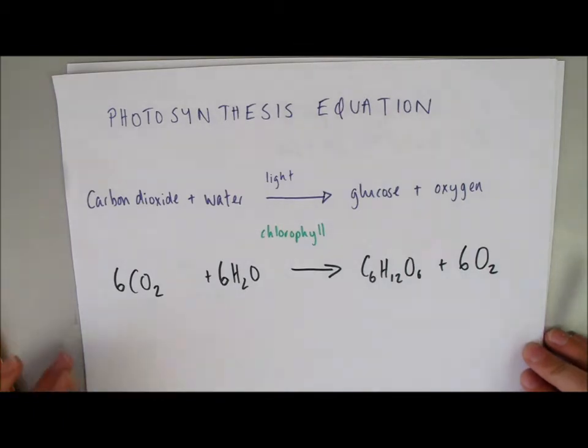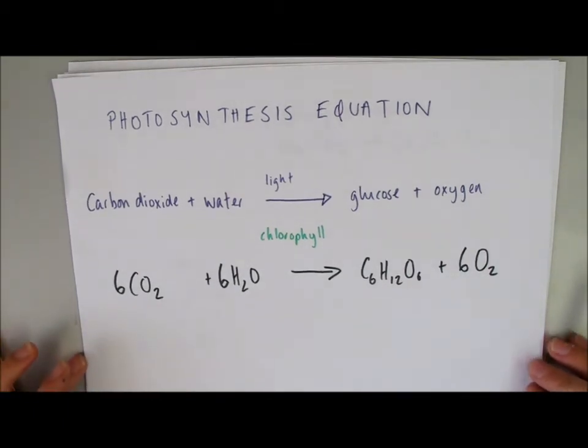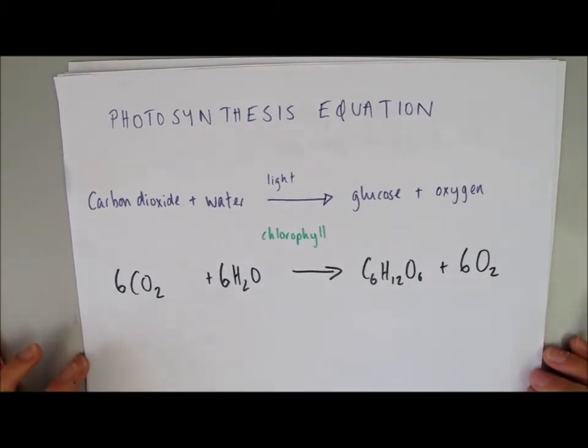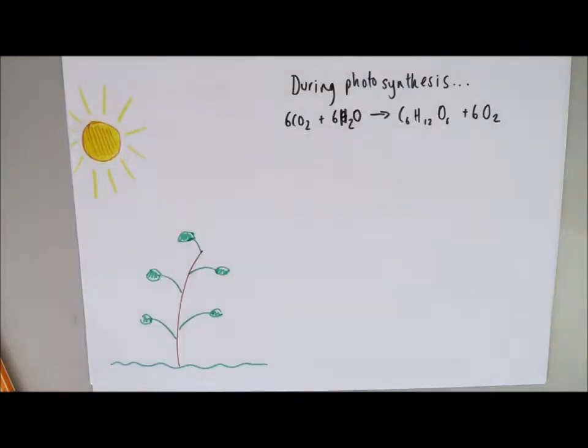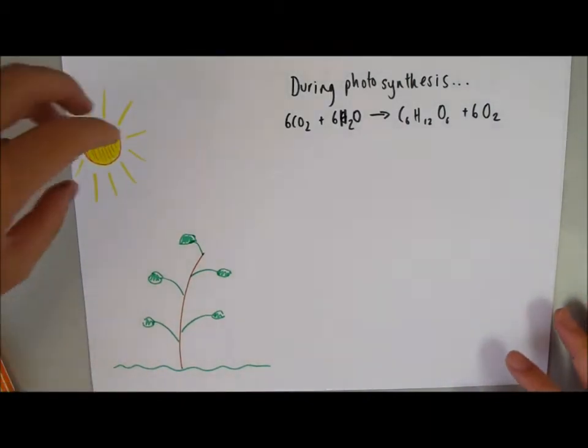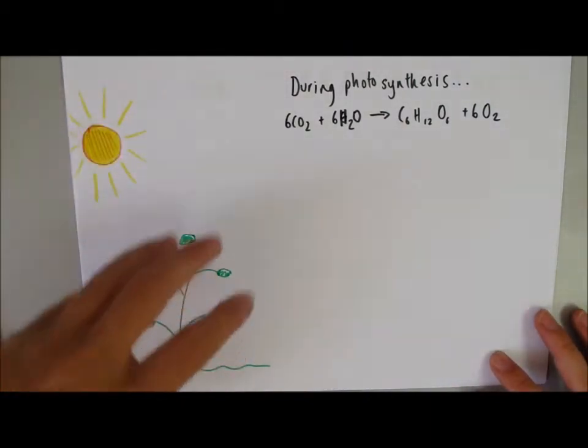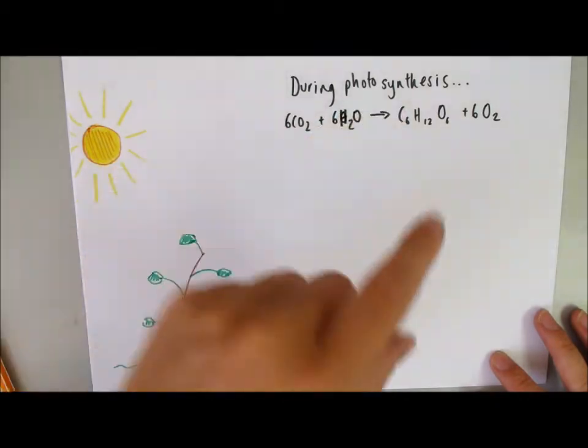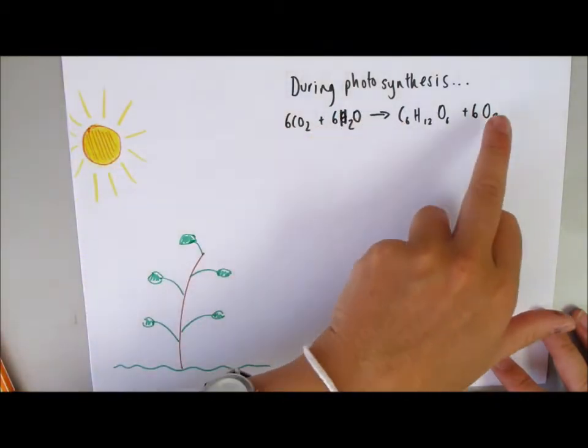So, how are we going to do an experiment to prove that photosynthesis is taking place and to prove that this is indeed what's going on? How are we going to show that photosynthesis is taking place? Well, here's our plant in the sunlight. So, it should be taking carbon dioxide and water and producing glucose and oxygen.